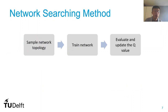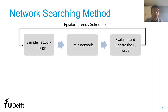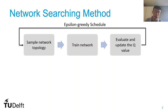Knowing all of this background, we present the network searching method. We start by sampling a network topology, training the network, evaluating the model, and updating the Q value. We repeat this process with the epsilon-greedy schedule, which balances exploration and exploitation. At the beginning of the search, we set epsilon to a higher value so the sampled network topology will be random, allowing the agent to better explore the searching space. Then, as the agent learns more about the environment, we gradually decrease epsilon, moving from exploration to exploitation. The agent will then tend to select topologies that give a higher Q value or higher reward.